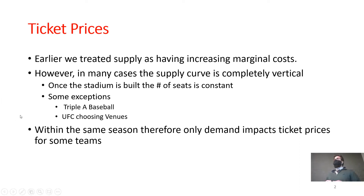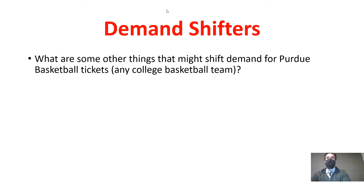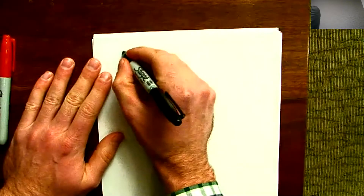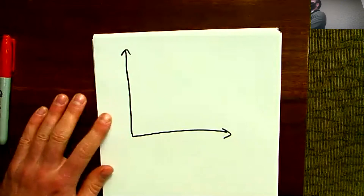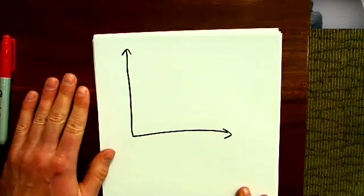The best way to think about this is we're considering the ticket market within one season — not making long-run changes. I've got a discussion of demand shifters in the slides. I'm going to show you a diagram now; if I start drawing off-screen let me know. On the x-axis we have quantity of tickets, and price will be on the y-axis.